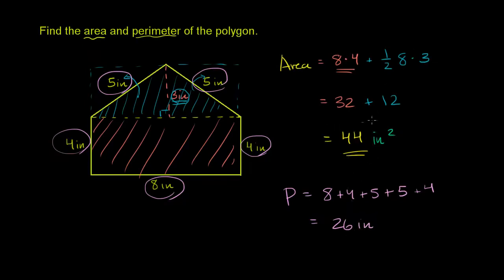And that makes sense because this is a two-dimensional measurement. It's measuring something in two-dimensional space. So you get a two-dimensional unit. This is a one-dimensional measurement. It's only asking you, essentially, how long would a string have to be to go around this thing. And so that's why you get one-dimensional units.